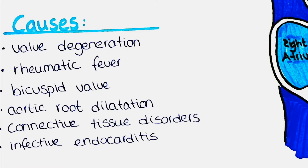Aortic root dilatation can also lead to aortic regurgitation. It is the enlargement of the aortic root, which causes stretching of the aortic valve leaflets and can prevent proper closure. Connective tissue disorders like Marfan syndrome and Ehlers-Danlos syndrome often affect the structural integrity of the aortic valve and contribute to aortic regurgitation. Other causes are infective endocarditis and aortic dissection.